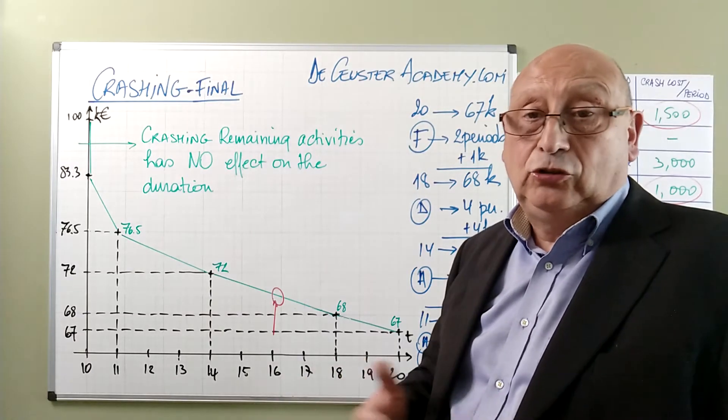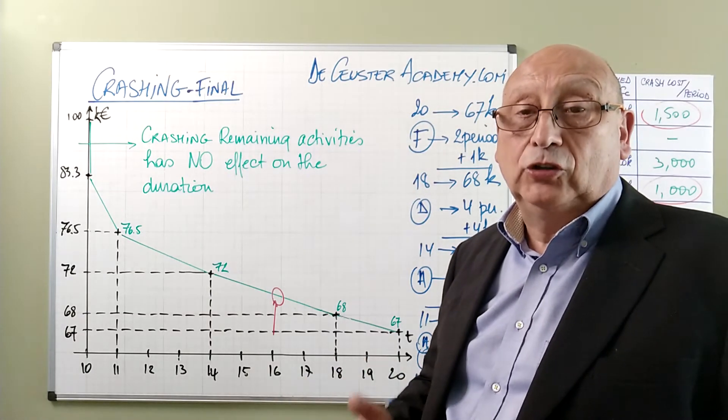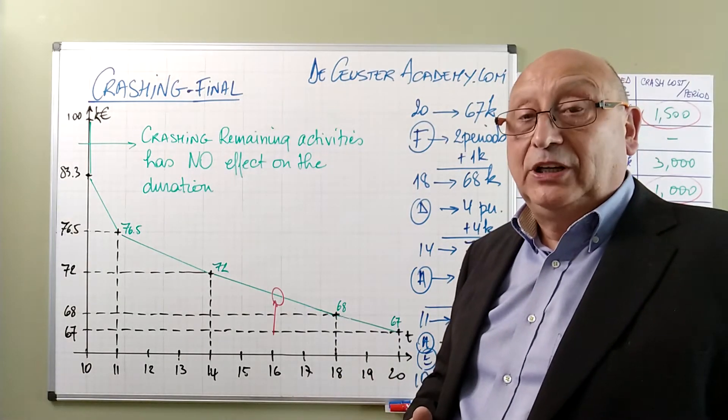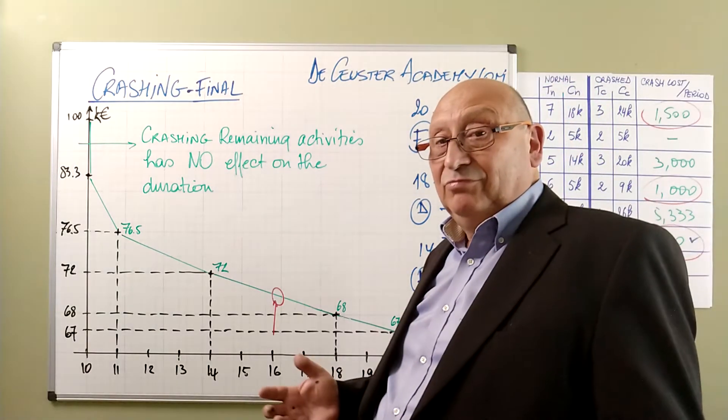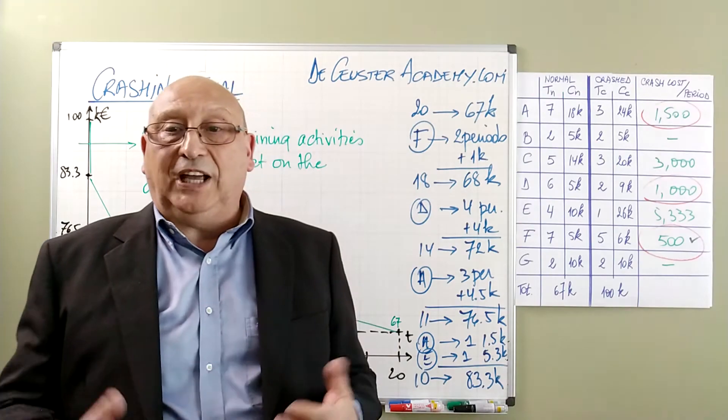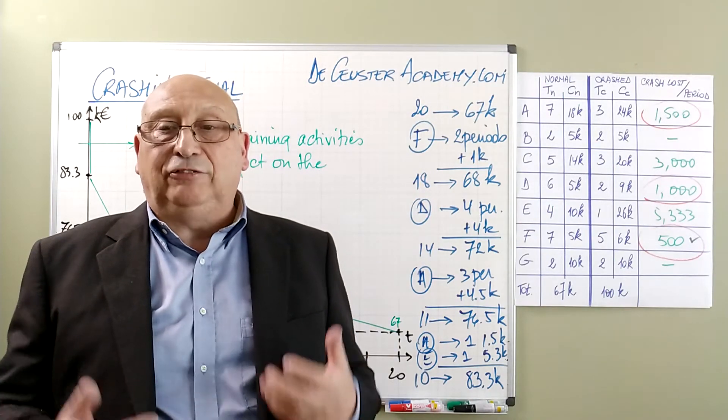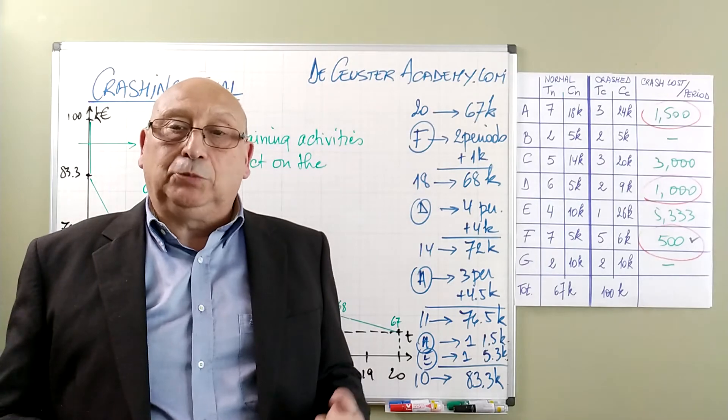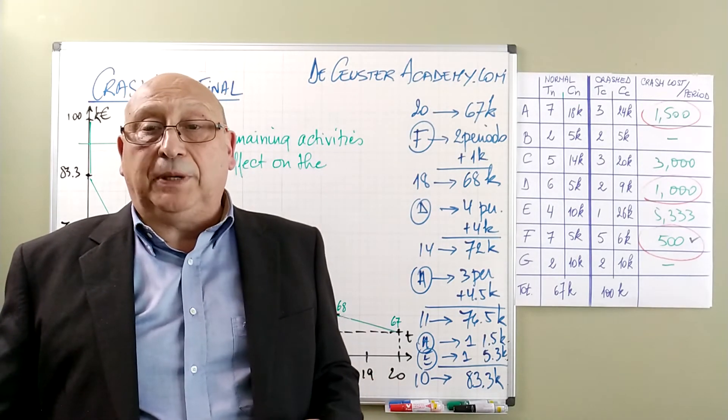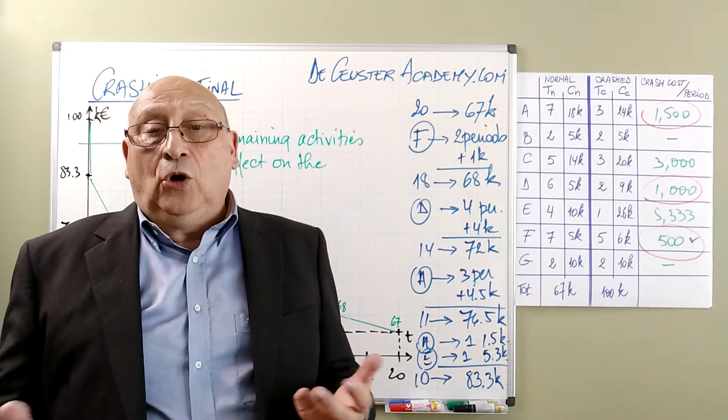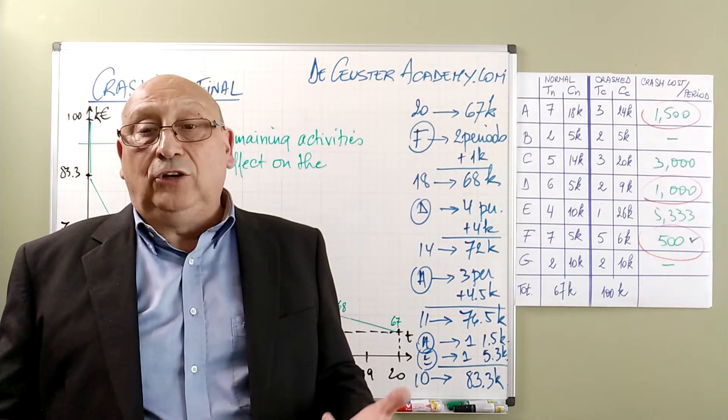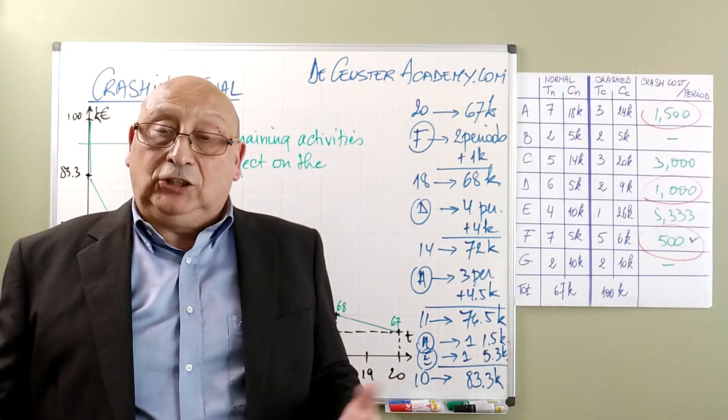When these two compensate each other, when they compensate the cost for crashing, we continue crashing and we find an economical solution. Crashing is not so difficult, but it becomes complex because we have different steps that we have to do, we have to redo. And project management software of course offers this possibility. It's also a typical application in linear programming where you can find the optimal solution when you are crashing.